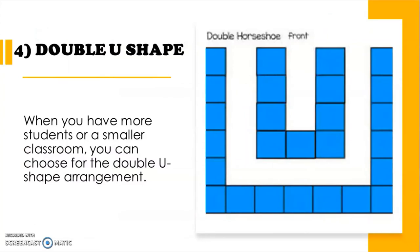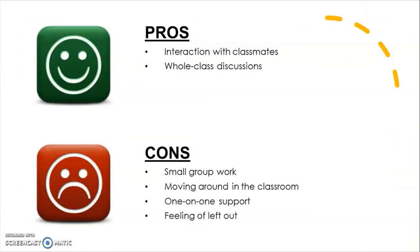The fourth one is W-shape. Where you have more students or a smaller classroom, you can choose the W-shape arrangement. This allows you to put more students next to each other. It enables students to easily see their classmates and interact with them during discussions, and is suitable for whole class discussions. However, it cannot accommodate small group work well, though students can still work in partners with the person beside them if required. It's harder for the teacher to go around the classroom, one-on-one support is limited, and students in the back might feel a bit left out.